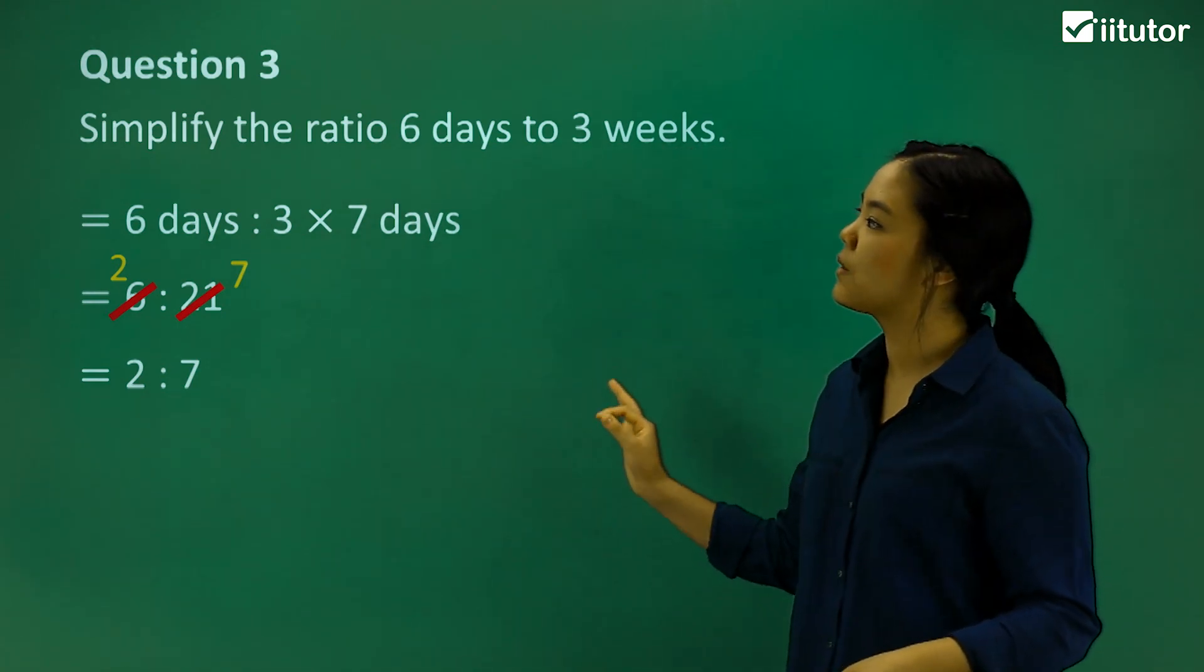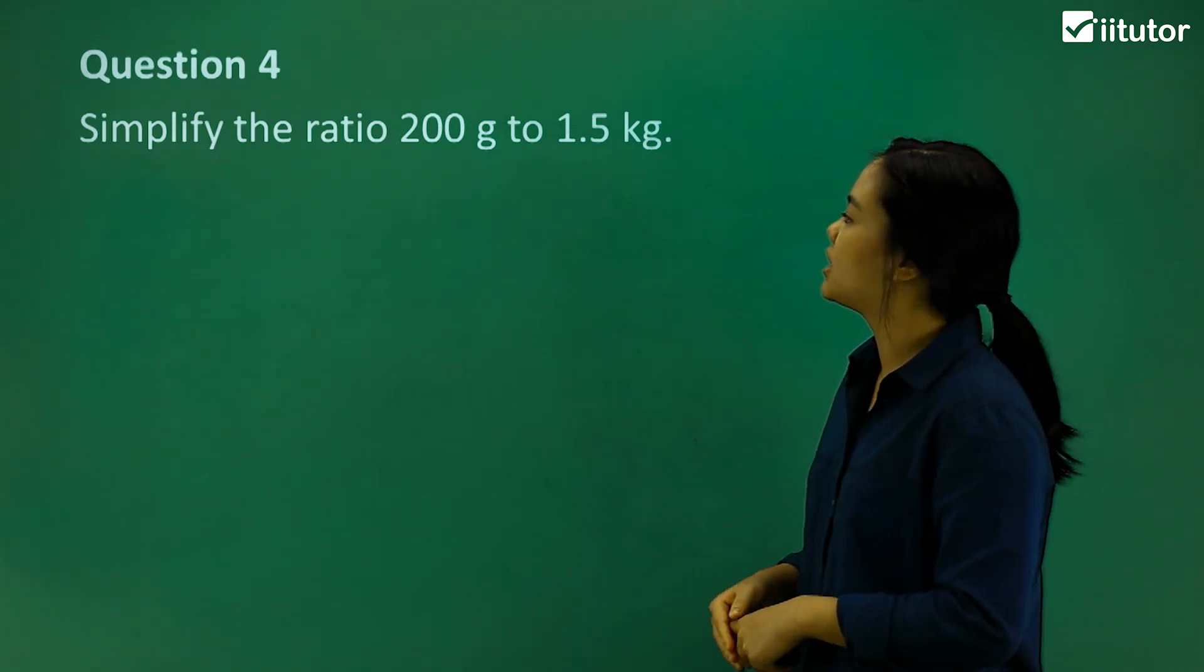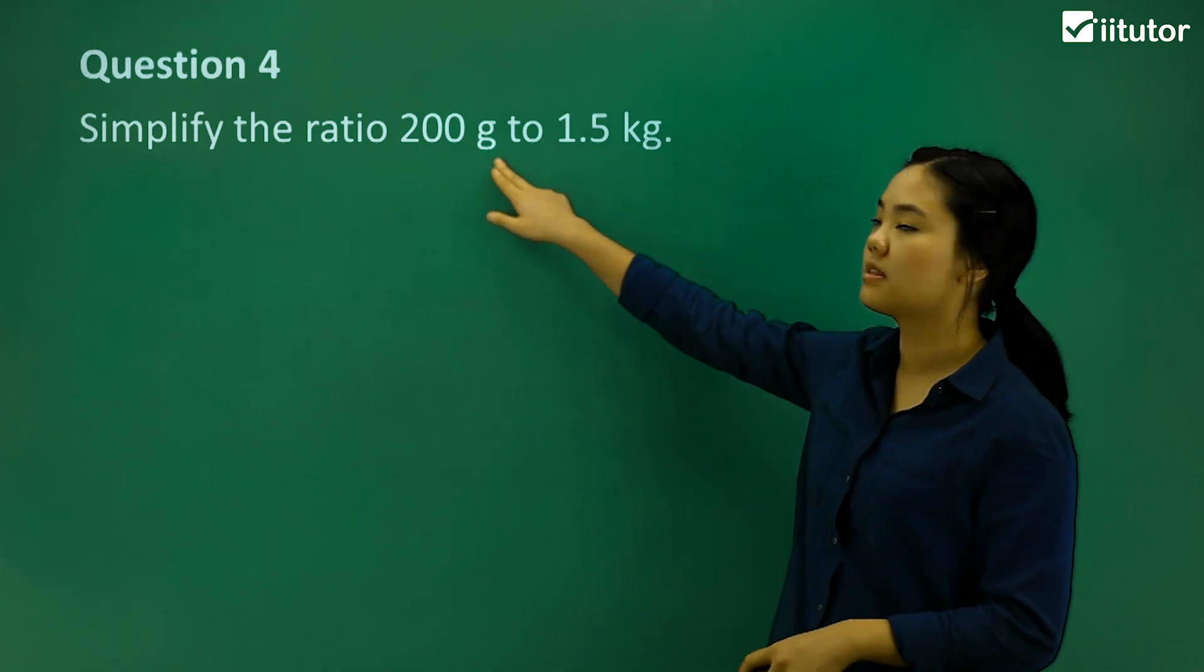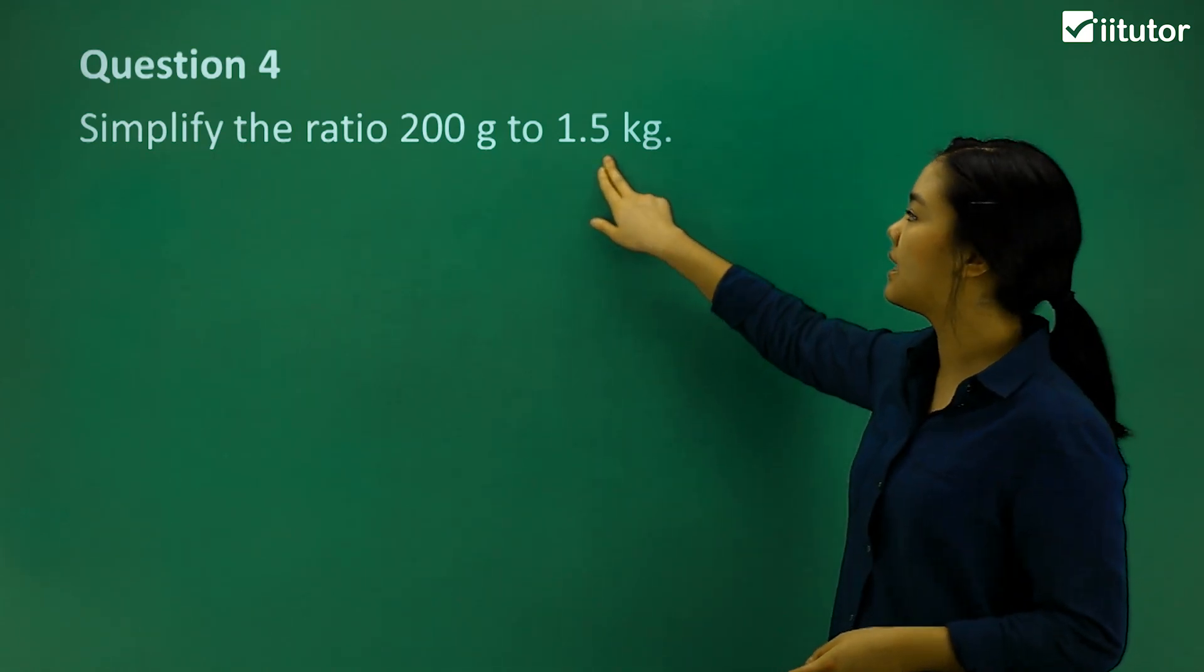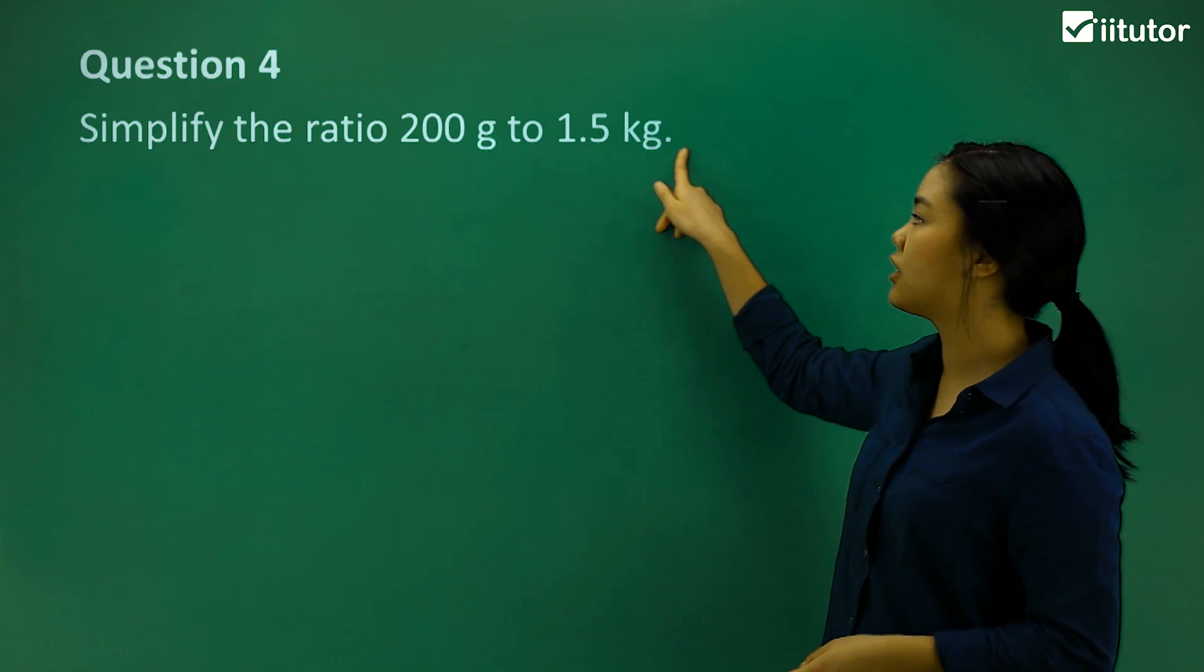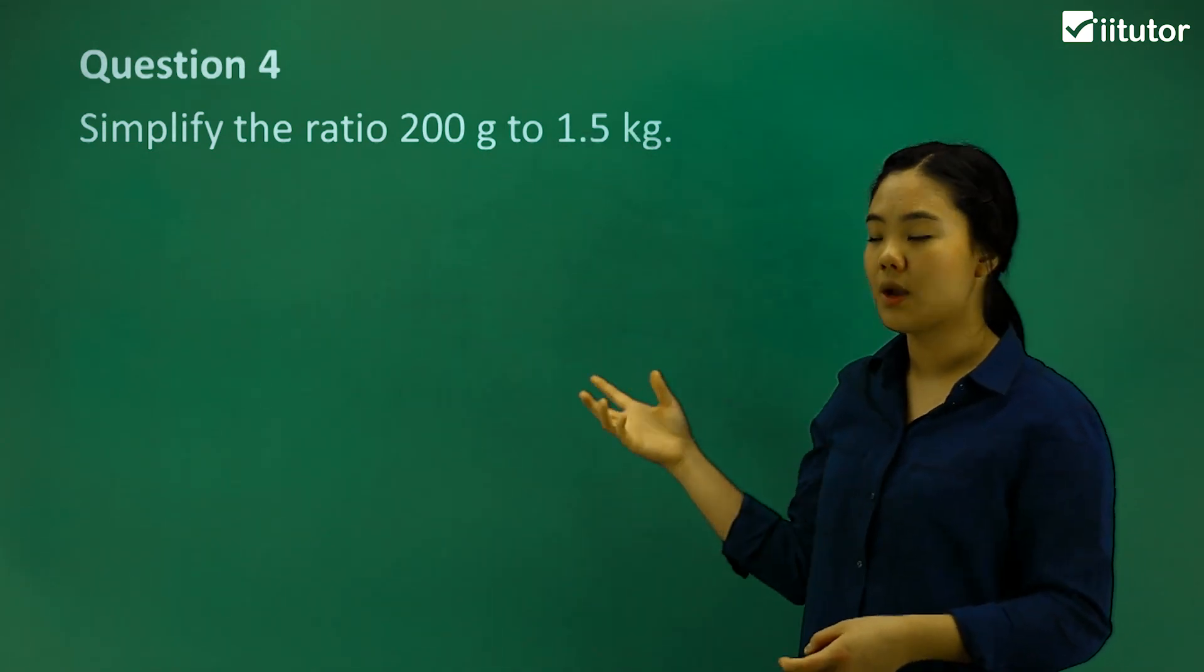Okay, let's try question 4. Simplify the ratio of 200 grams to 1.5 kilograms. Again, changing the unit of measurements to grams. That's a smaller one. We can get whole numbers.